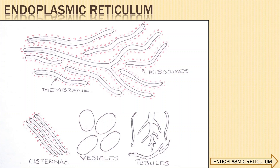It is formed of three types of elements namely cisternae, tubules and vesicles, as marked in the diagram. Cisternae are long, flattened, sac-like, unbranched structures which lie in stacks parallel to one another. Tubules are branched structures forming the reticulum system along with the cisternae and vesicles. Ribosomes are generally lacking in these structures.